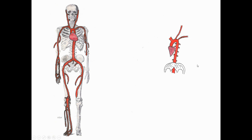We first have the ascending aorta leaving the heart, giving off the brachiocephalic trunk on the right, as well as the left common carotid and left subclavian arteries. Thereafter the aorta turns southward into the thoracic aorta, which gives off multiple intercostal arteries. The aorta will then pierce the diaphragm moving into the abdomen.